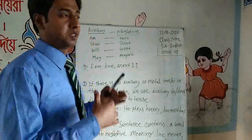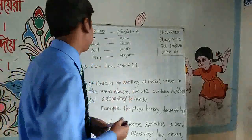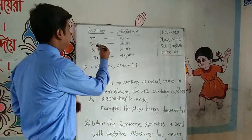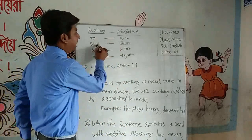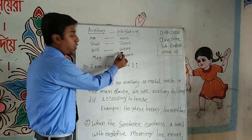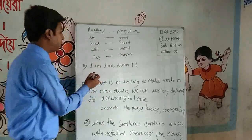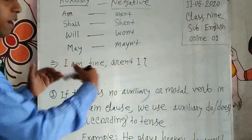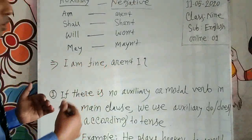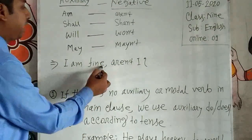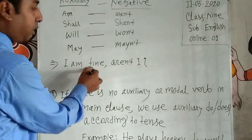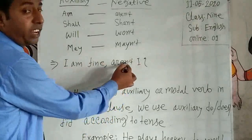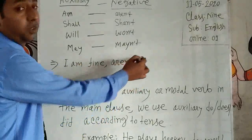Now we need to know some special negative forms of auxiliary verbs. The negative form of 'am' is 'aren't'. For example: 'I am high.' This sentence is affirmative, so we use a negative tag. The negative form of 'am' in a tag question is 'aren't', so we use 'aren't I?'